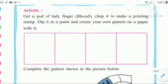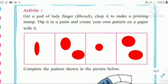Get a part of lady finger (Bindi) and chop it to make a printing stamp. Dip it in paint and create your own pattern on paper. You have to take a lady finger, chop it, get a small shape, dip that small piece into the paint (color), and then put it on the paper. You will get the stamp of the Bindi and you can make your own pattern on the paper.